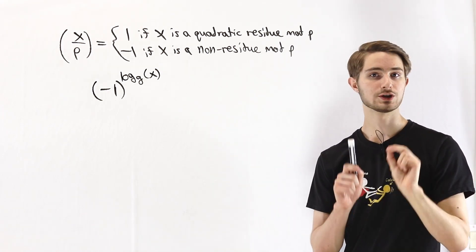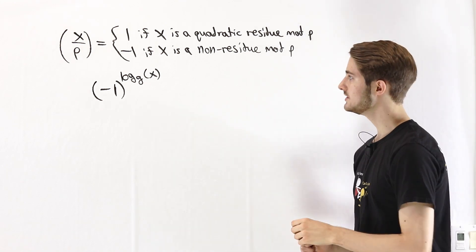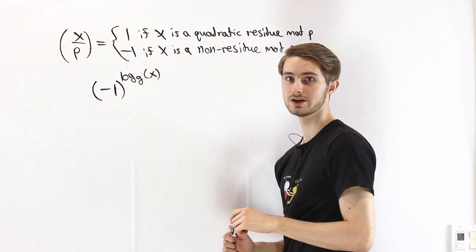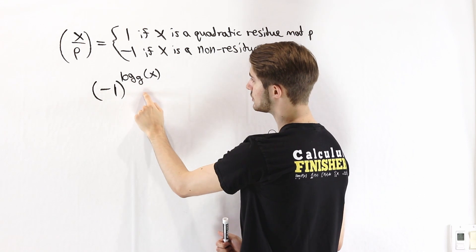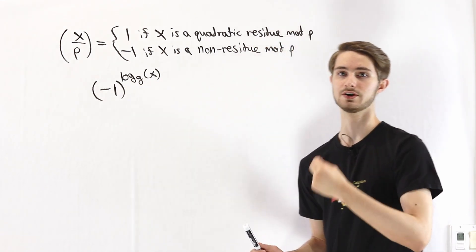We know that quadratic residues always have even index. What that means is that if x is a quadratic residue, then the index of x is going to be even. So (-1) to an even power, that's going to give us 1.